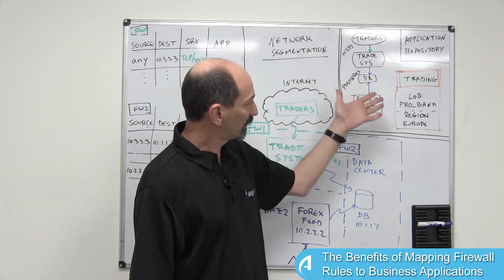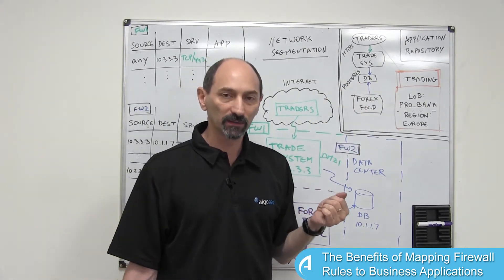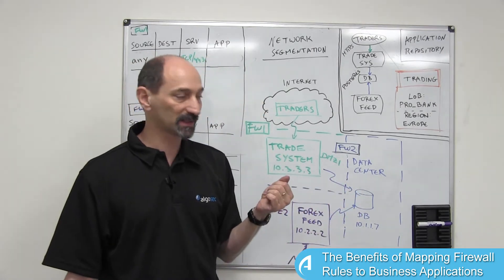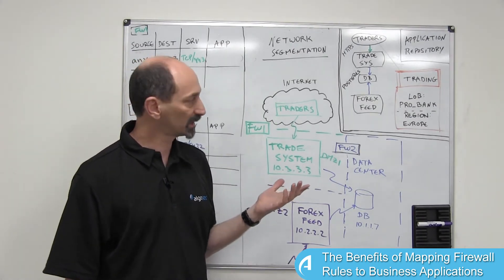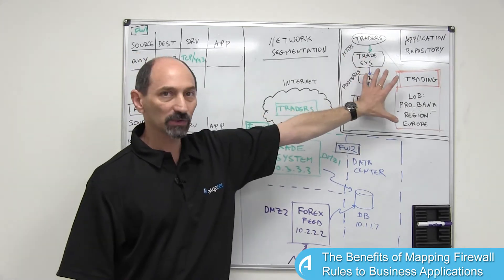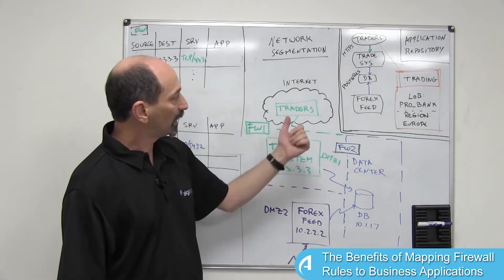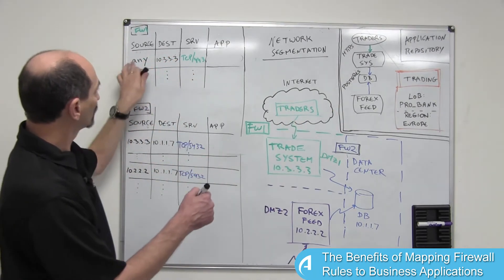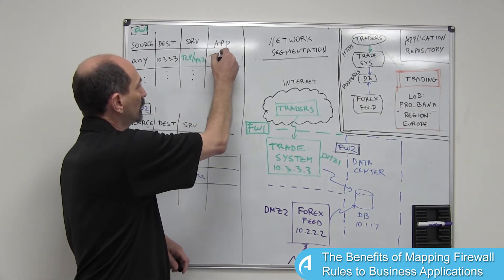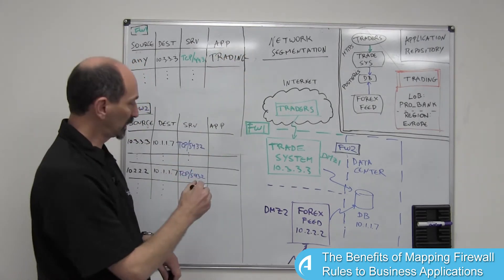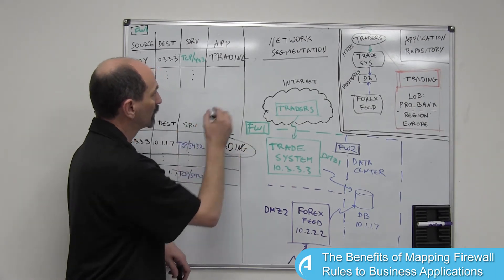Now if this system, the application repository system, is properly integrated with the network security policy management system that is aware of these rules, then a good, well integrated system can map the applications to the firewall rules automatically. Imagine that such a system would automatically annotate all of these rules and add a comment saying that this rule is really part of the trading application and these two rules are also part of the trading business application.